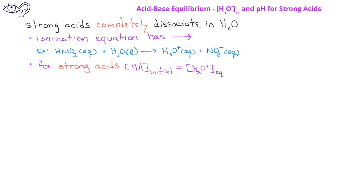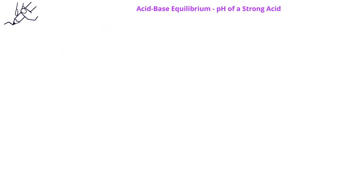This situation makes it easy to calculate the pH for a strong acid solution. Let's see an example of how easy it is to find the pH for a strong acid solution. In this problem, we're asked to find the pH of a 0.047 molar solution of hydrochloric acid.